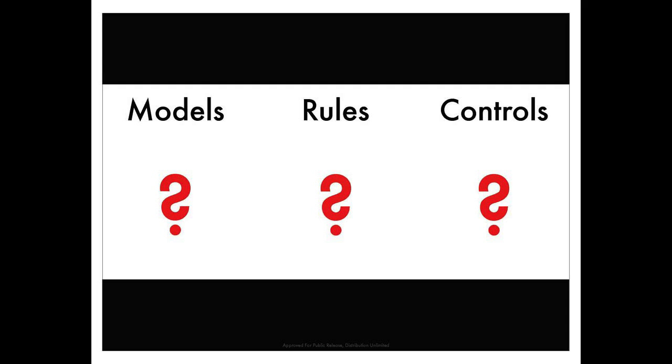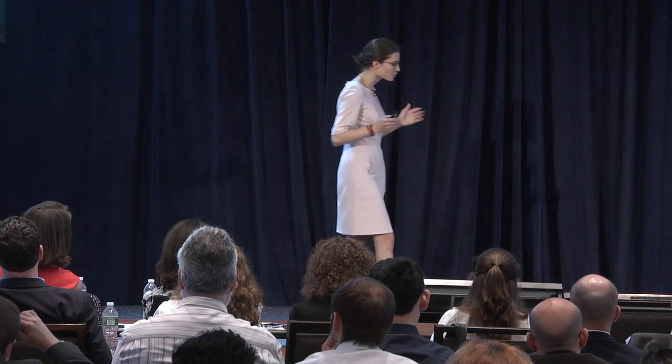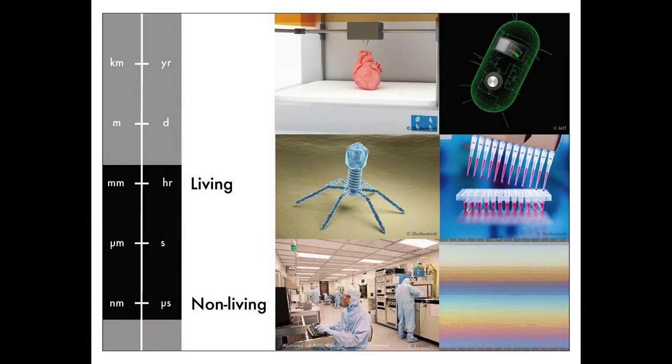We can start by focusing in on the small scales, from biomolecules up to cells. This is a great place to start because something truly remarkable happens at these scales with stunning regularity: the transition from systems that don't have the properties of being alive to systems that do. There's a compelling fundamental reason to start there.